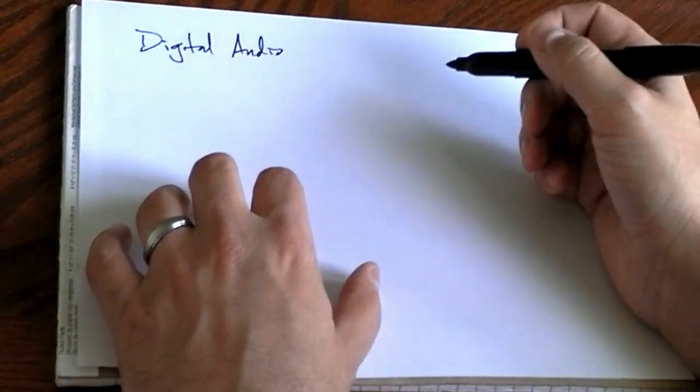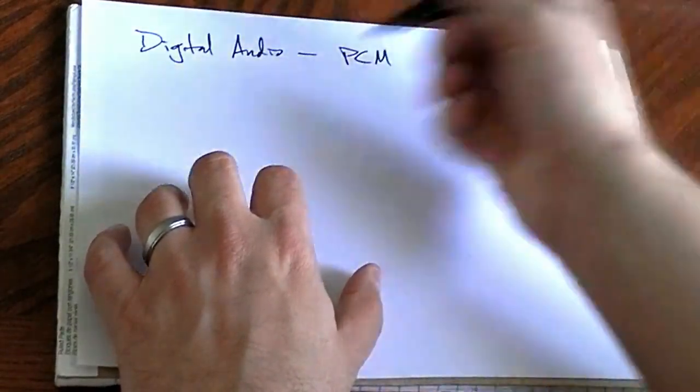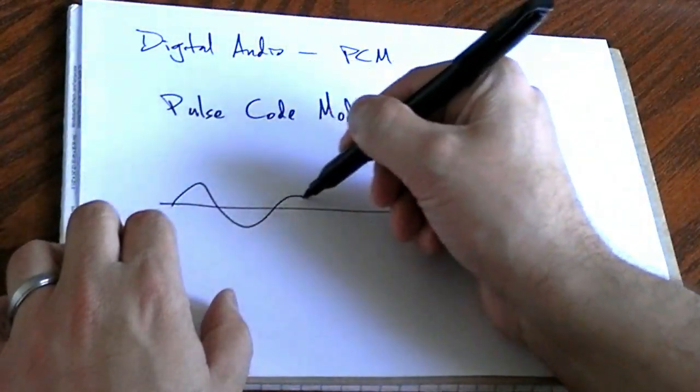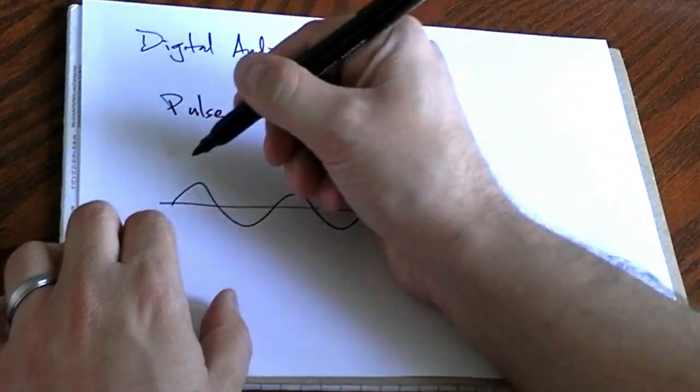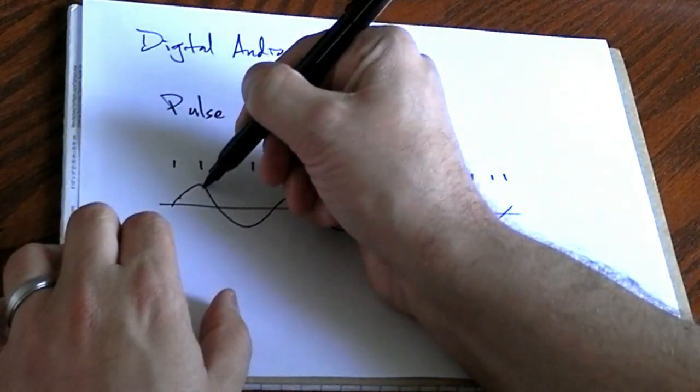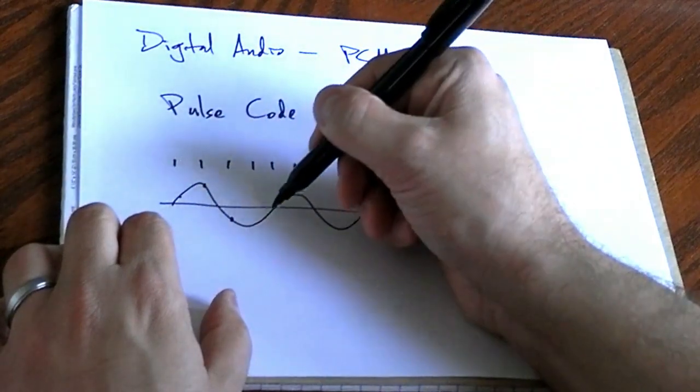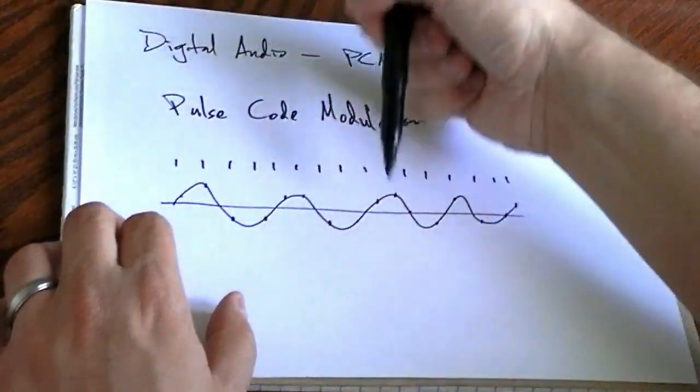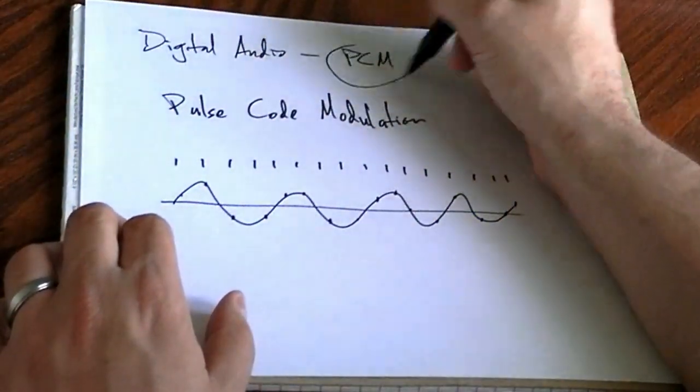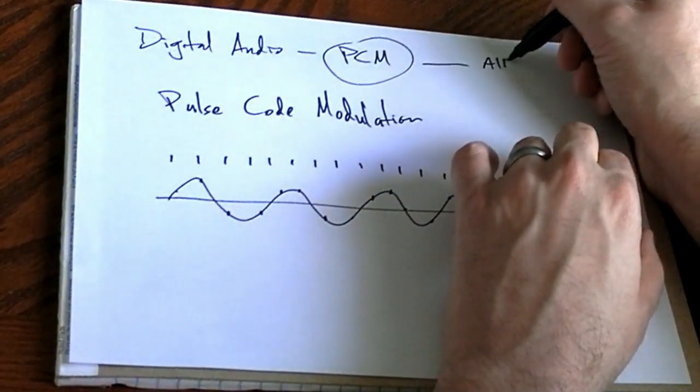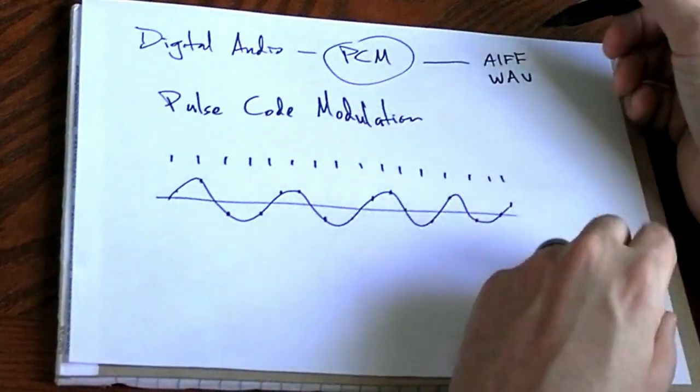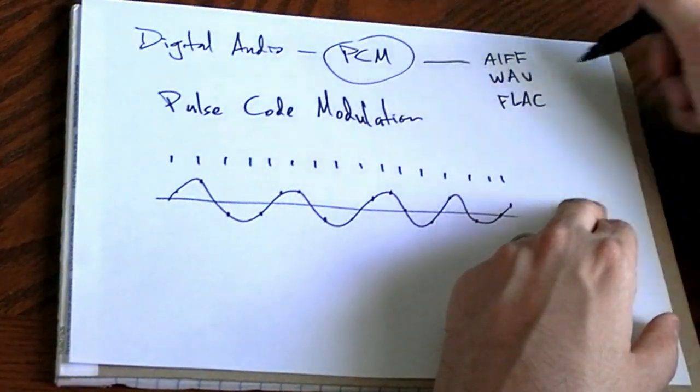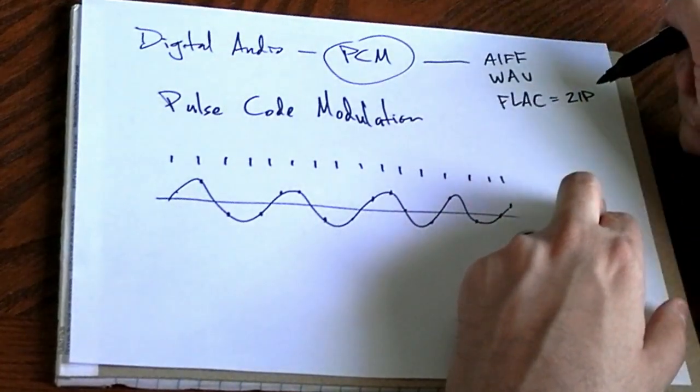The type of digital audio that we're going to discuss here is called PCM, which stands for Pulse Code Modulation. Basically what this means is you've got a sound wave and you take snapshots of it at regular intervals, snapshots like so, called samples, and you encode each sample as a number in binary. PCM is the way that AIFF WAV files work. It is indirectly the way that FLAC files work. FLAC is basically a fancy zip.